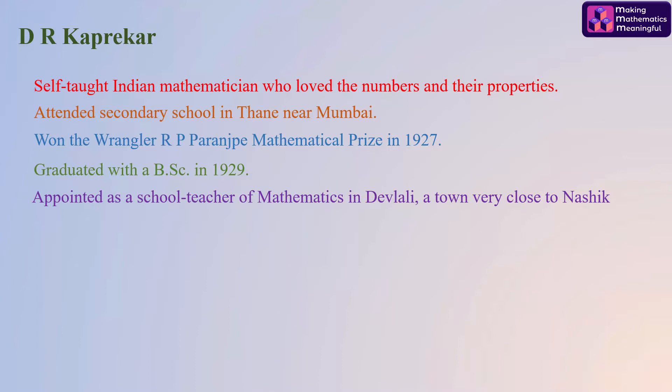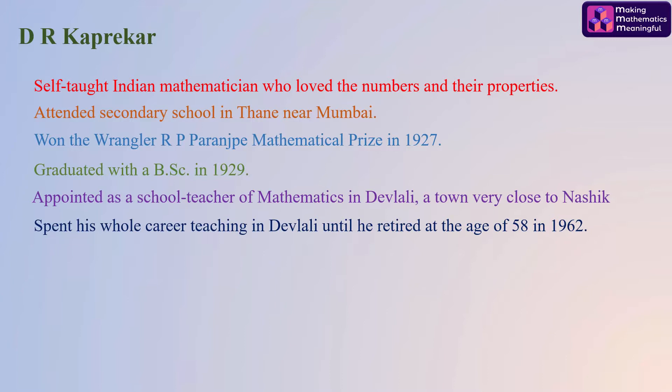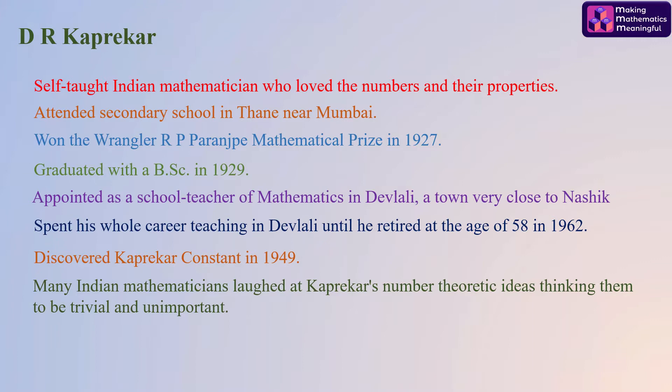He was appointed as a school teacher of mathematics in Deolali, a town very close to Nasik. He spent his whole career teaching in Deolali until he retired at the age of 58 in 1962. He discovered the Kaprekar constant in 1949. Many Indian mathematicians laughed at Kaprekar's number-theoretic ideas, thinking them to be trivial and unimportant.